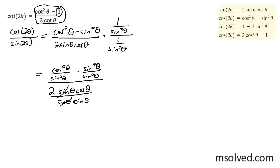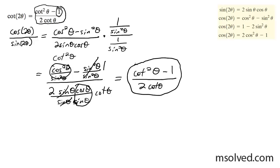These cancel each other out. This becomes 1, this becomes cotangent squared theta, and this becomes cotangent theta. So we end up with cotangent squared theta minus 1 all over 2 cotangent theta, which is what we're looking for. That's it.